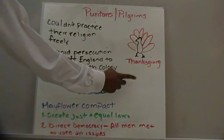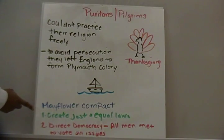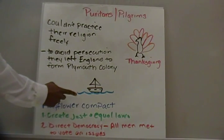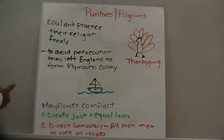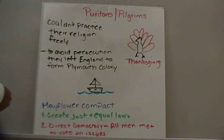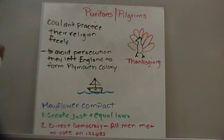This story all follows the Thanksgiving story. When they came over here, just like Jamestown, they had to figure out how to establish their own government. So the Puritans or Pilgrims came up with the Mayflower Compact. The word Mayflower refers to the ship they sailed over in. The Mayflower Compact was signed and created aboard the Mayflower on their way to the New World. When they arrived, they formed Plymouth Colony. The Mayflower Compact was established to create just and equal laws for the individuals living in Plymouth Colony.